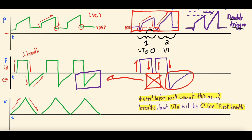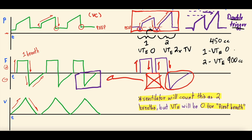On the second breath, the expiratory volume will be approximately two times the normal tidal volume. For example, if you're in volume control set to 450 cc, the first breath shows an expiratory volume of zero, and the second breath shows an expiratory volume of about 900 cc — because the patient essentially received two full breaths without ever expiring. This can be really problematic.